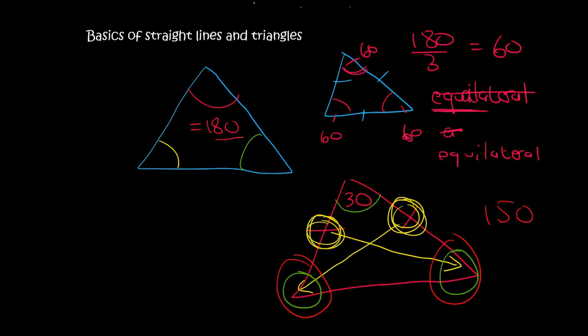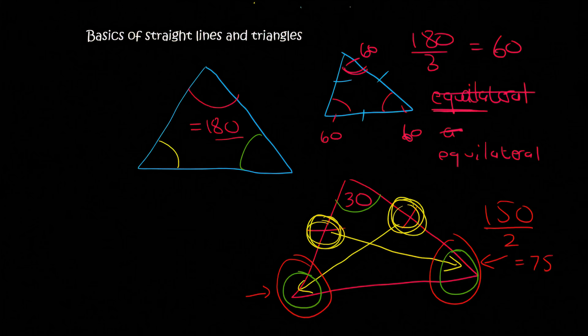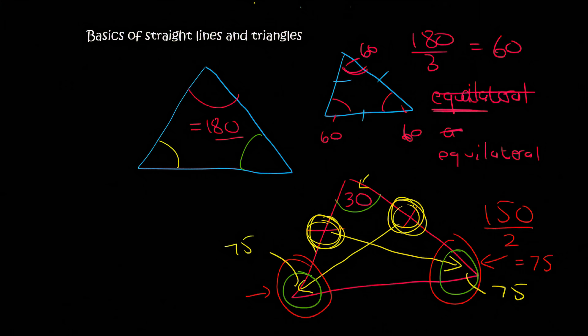Because then all of the angles will add up to 180. So if those two together add up to 150, but they are the same, then we can divide by 2 and get 75. So they are each 75 degrees. Because then you will get 75 plus 75 plus 30, and that gives you 180. A triangle where two of the sides are the same is called an isosceles triangle.